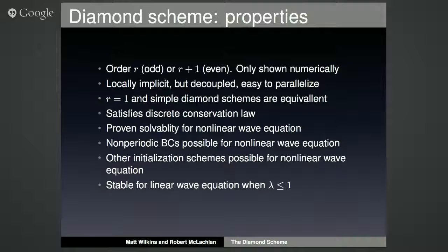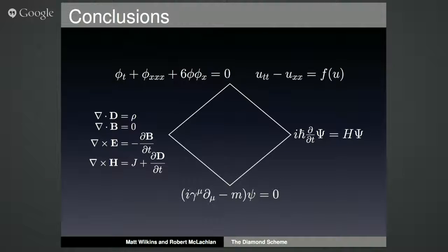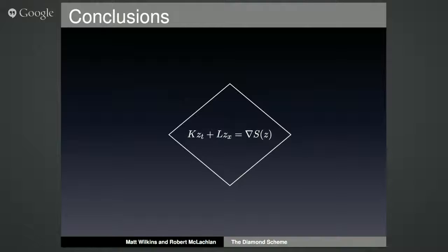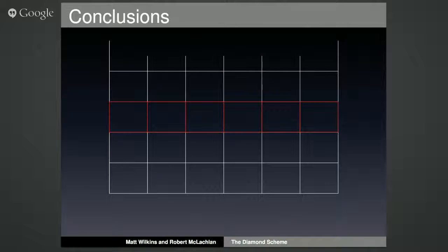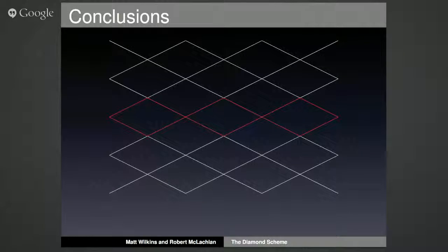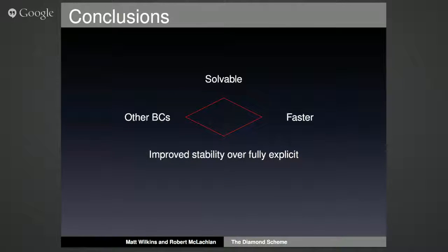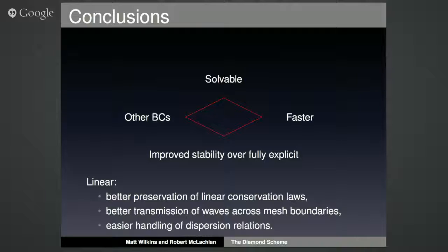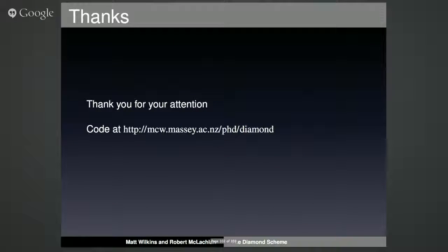Conclusions: instead of deriving schemes for all those different equations individually, we write them in the multi-Hamiltonian form and come up with one scheme. Traditionally people use a fully coupled rectangular grid; we use a diamond grid and solve one diamond at a time — it's actually solvable, easier to handle other boundary conditions, faster in parallel, and not fully explicit (it's implicit within each diamond, which should improve stability over fully explicit methods). Thank you for your attention.